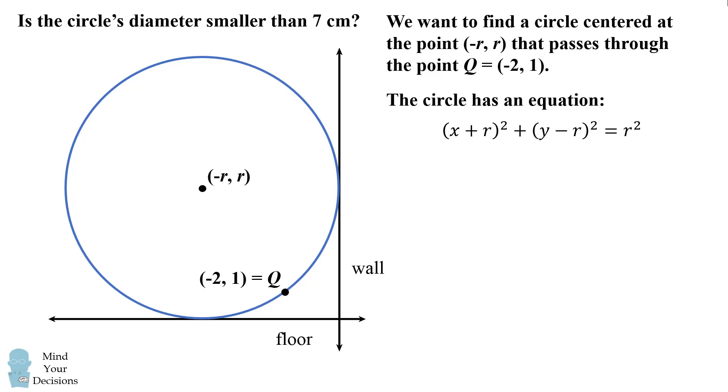A circle that is centered at (-r, r) and has a radius of r has the equation (x + r)² + (y - r)² = r². We want this circle to pass through the point q, which equals (-2, 1). So we'll substitute the value x = -2 and y = 1 into the above equation. This gives the quadratic equation (-2 + r)² + (1 - r)² = r². We now have an equation in a single variable r. We can expand out each of these binomials and then collect like terms to one side to get the following quadratic equation: r² - 6r + 5 = 0.